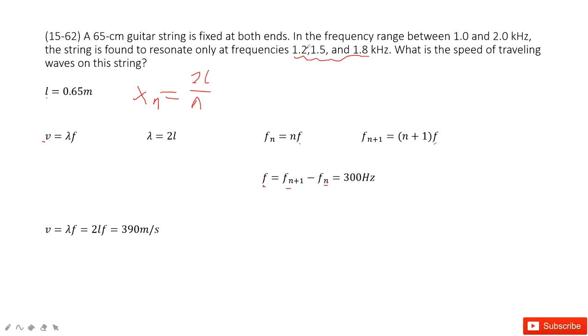Because 1,200 Hz to 1,500 Hz, 300 Hz. 1,500 Hz to 1,800 Hz, 300 Hz. So this is the difference between these two nodes.